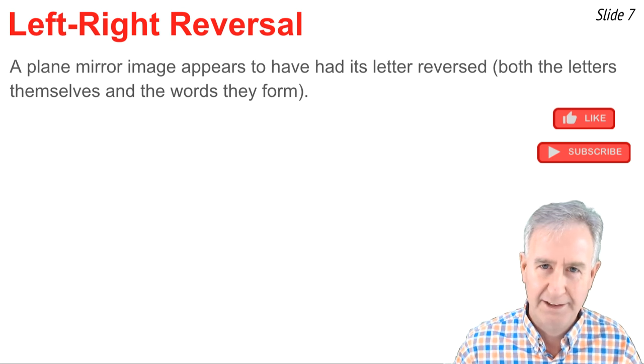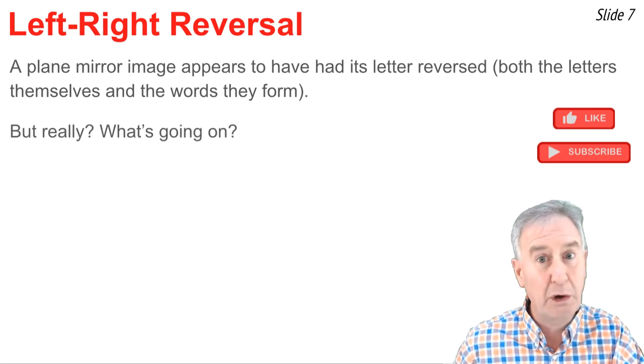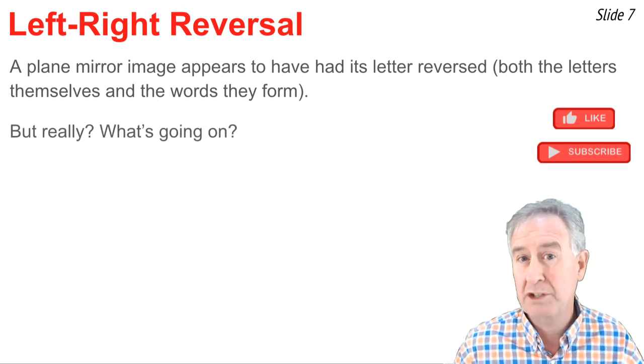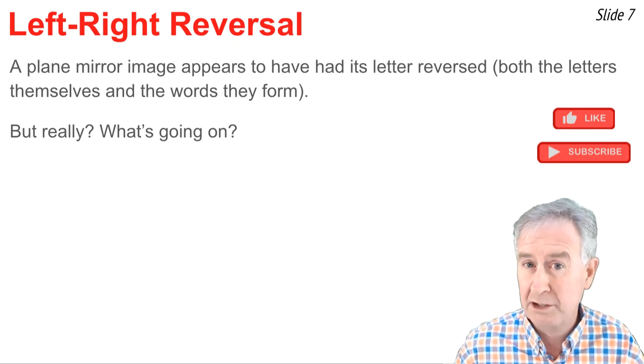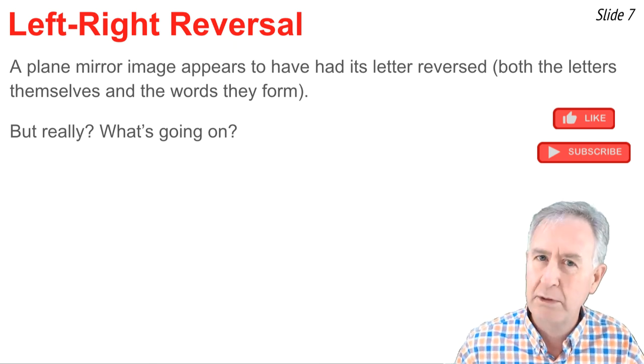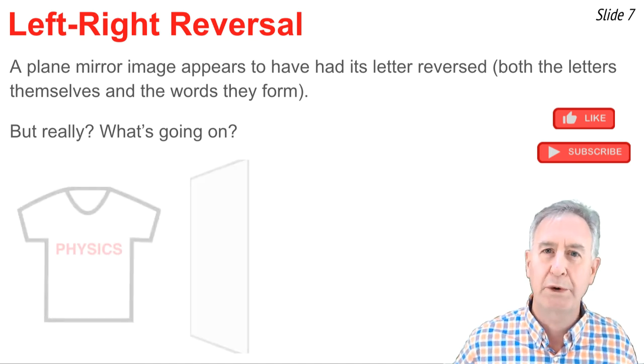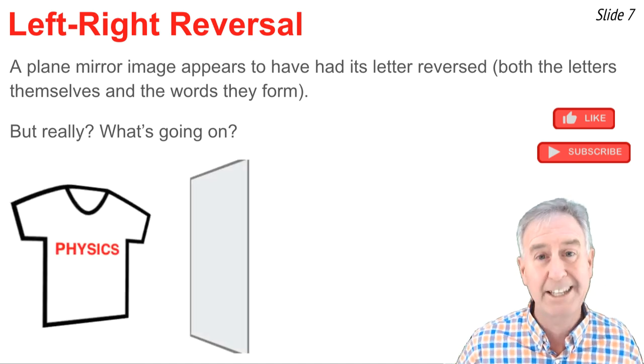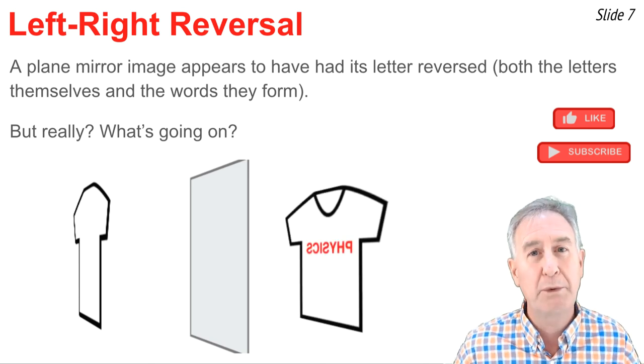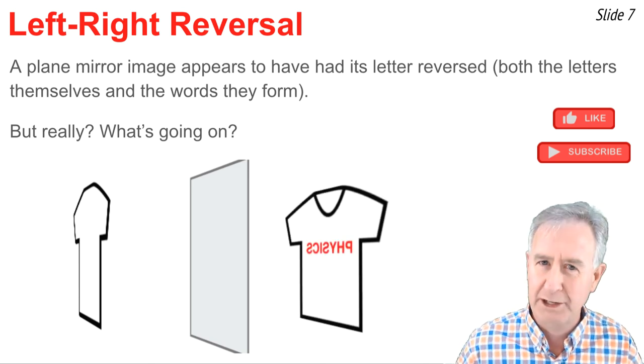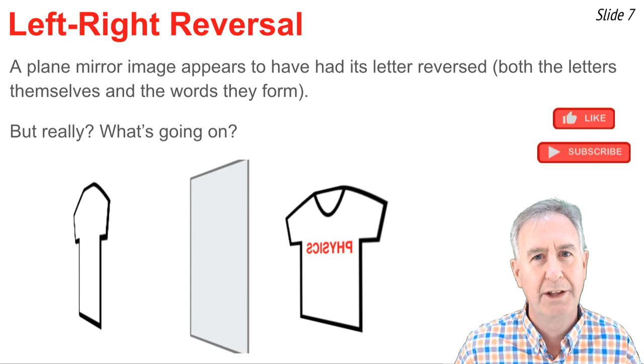Well, yeah, sure, you look in the mirror and you do notice that the word is written backwards and that the letters have been reversed, but don't blame the mirror for that one. Let me explain. Let's suppose I wear a shirt with my favorite word on it, physics, and then I turn and I look in the mirror, and sure enough, there would be the word physics written backwards, letters reversed. What's going on?